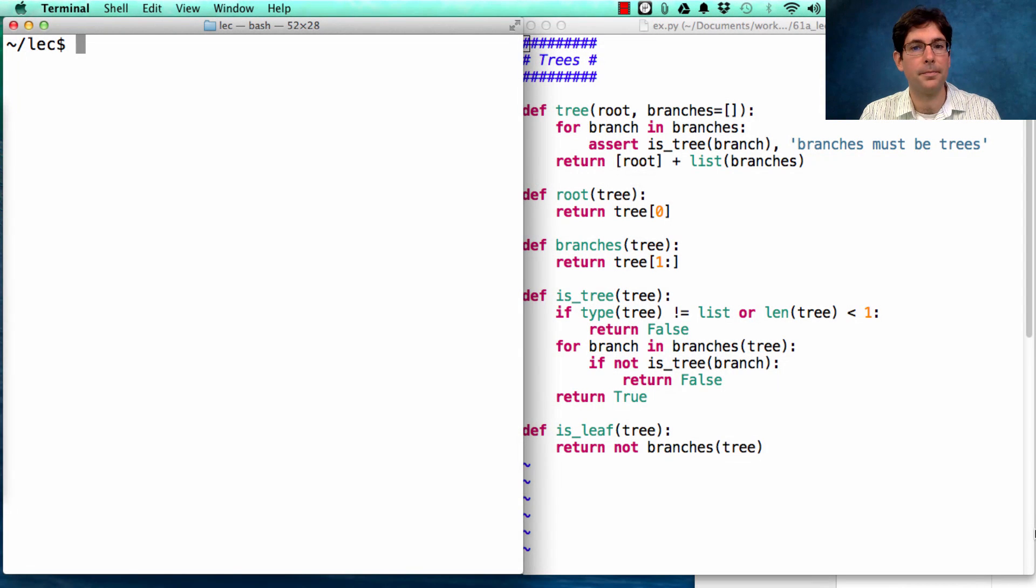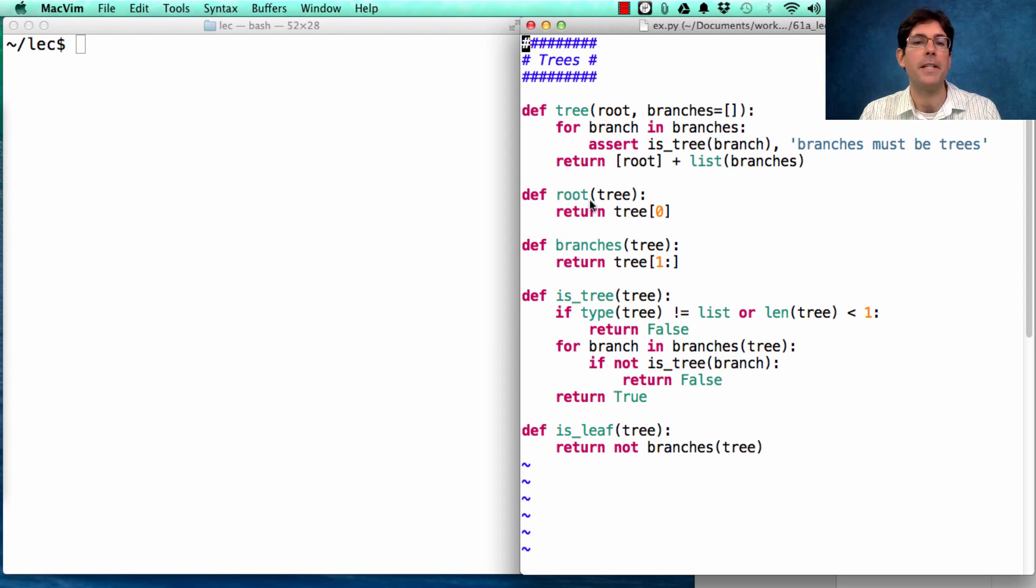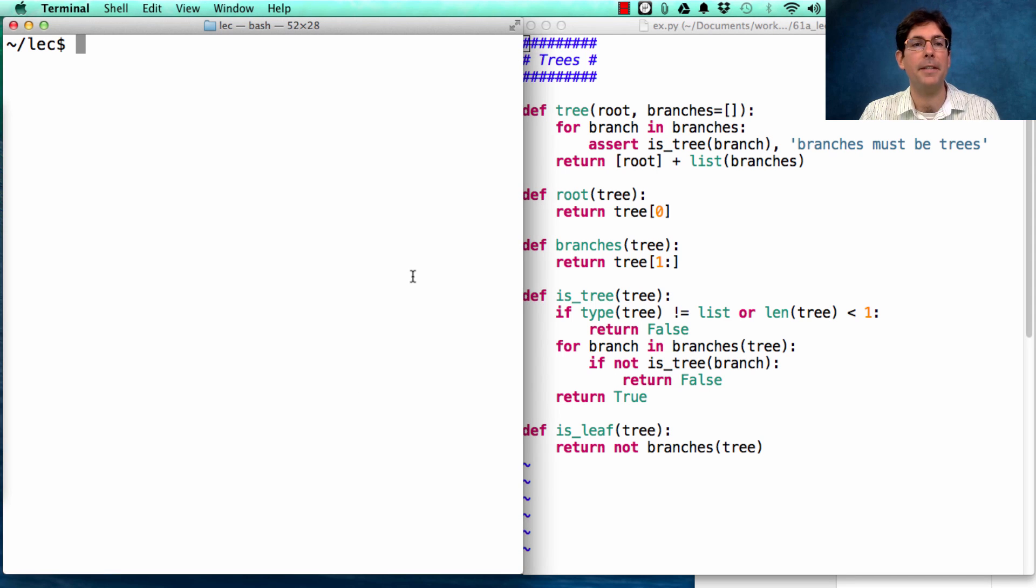Okay, let's play around. Here's our definition of a tree, the root, the branches, whether it's a tree or not, and whether something's a leaf. So, I can create a tree just by passing in a root value. And by the way, that's a leaf.